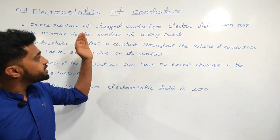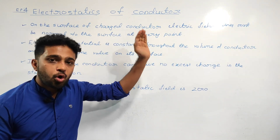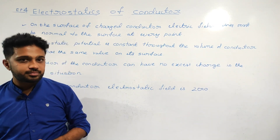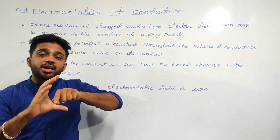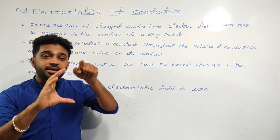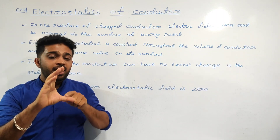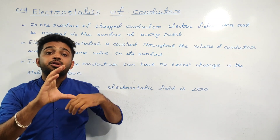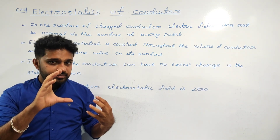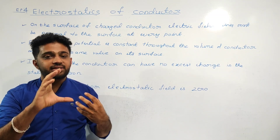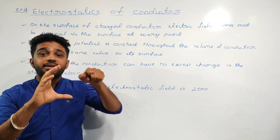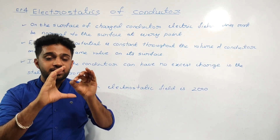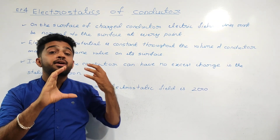Next point: electrostatic potential is constant throughout the volume of a conductor and has the same value on its surface. This is a charged conductor. We calculate the electrostatic potential at a particular point, and that value is constant.